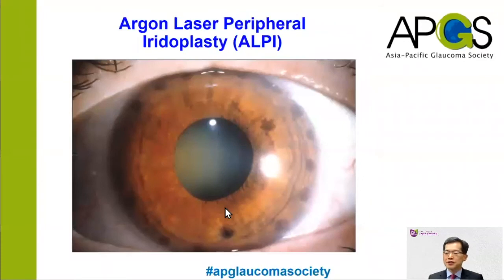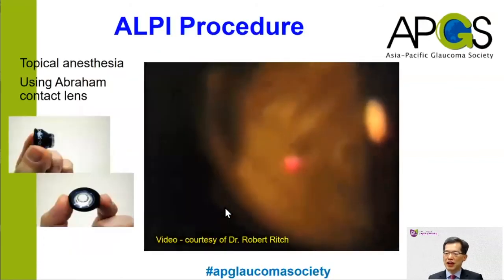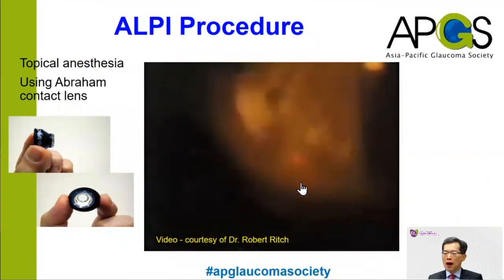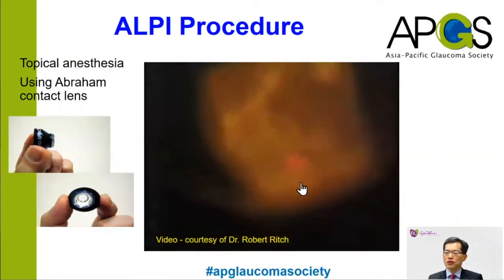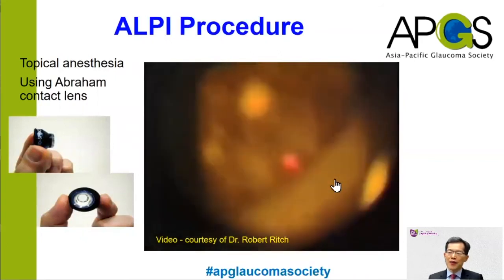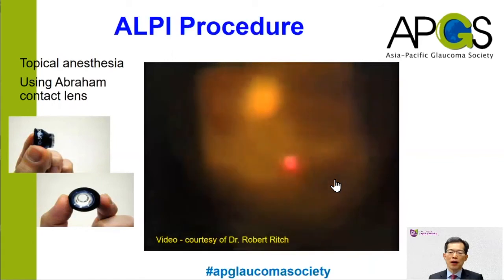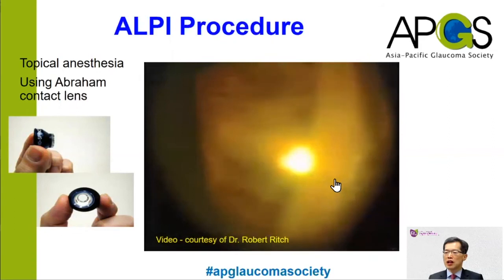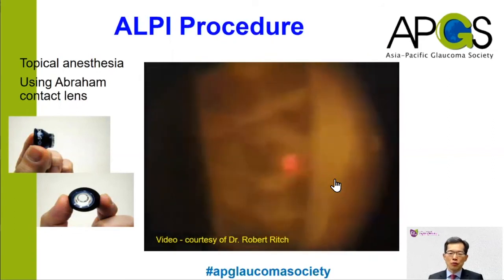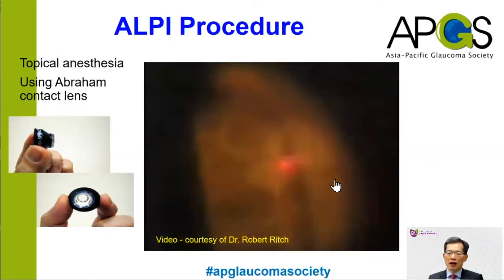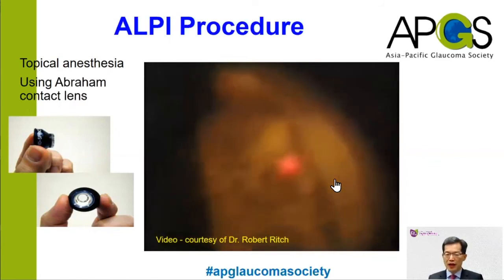With plateau iris syndrome, argon laser peripheral iridoplasty is a very effective and safe procedure. In this video, you can see that a low power, long duration, and large spot size laser is being applied to the peripheral iris, thereby inducing contraction of the iris. With this, you can reopen an appositionally closed drainage angle. It is very important when performing ALPI to apply the laser spot as far to the periphery of the iris as possible.